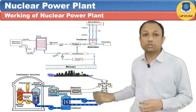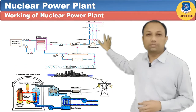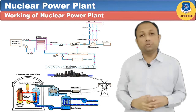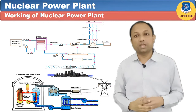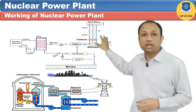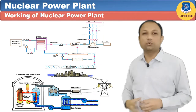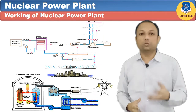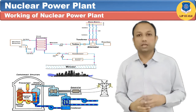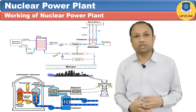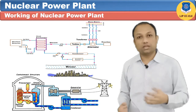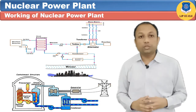Let's discuss about the working of the nuclear power plant. The schematic arrangement of the nuclear power plant is shown in the figure. In the nuclear power plant, heat is produced in the nuclear reactor and is absorbed by the coolant. The coolant becomes hot, and this hot coolant is passed through the heat exchanger.